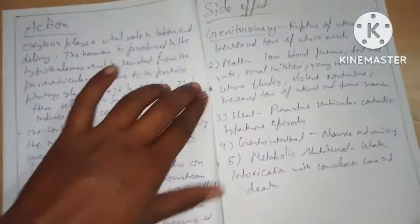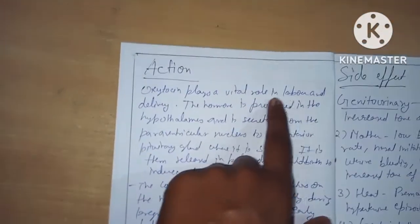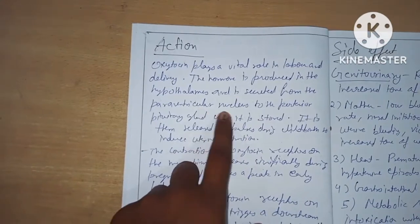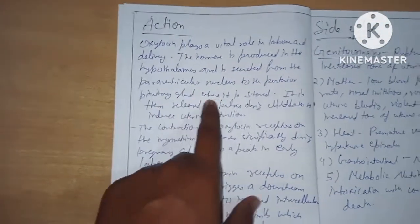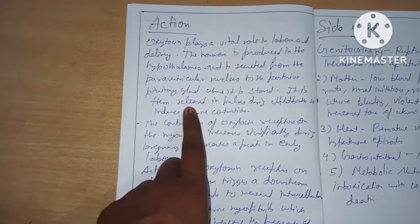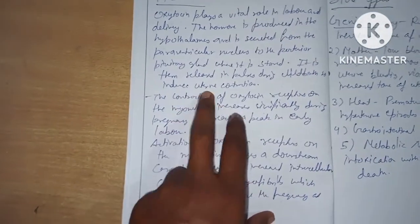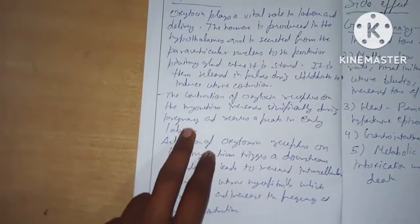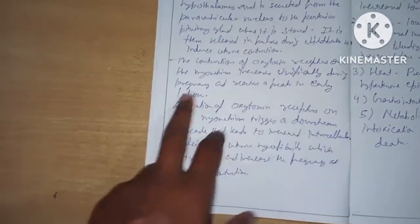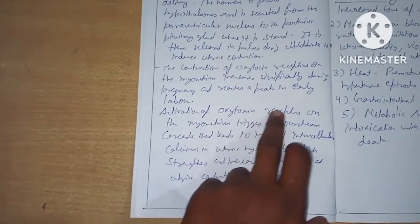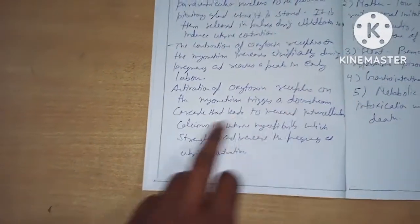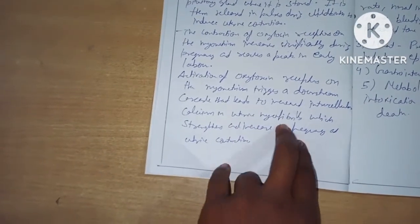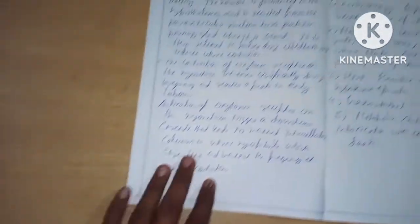Next is action. Oxytocin plays a vital role in labor and delivery. The hormone is produced in the hypothalamus and secreted from the paraventricular nucleus to the posterior pituitary where it is stored. It is then released in pulses during childbirth to induce uterine contractions. The concentration of oxytocin receptors on the myometrium increases significantly during pregnancy and reaches a peak in early labor. Activation of these receptors triggers downstream cascades that lead to increased intracellular calcium in uterine myofibrils, which strengthens and increases the frequency of uterine contractions.